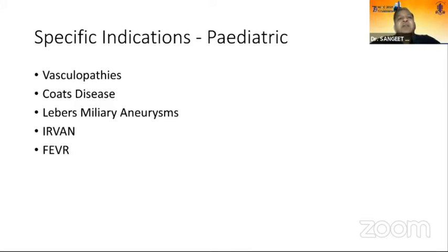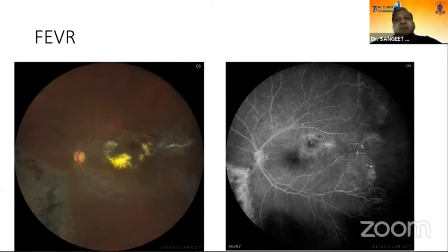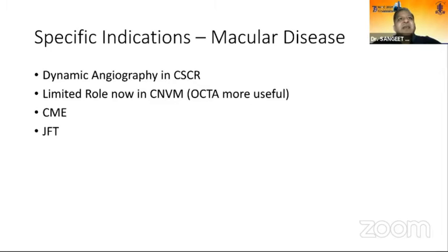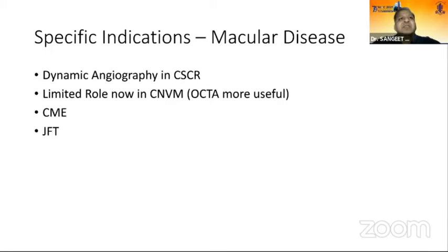Pediatric indications include vasculopathies, Coats' disease, Leber's miliary aneurysms, and others where peripheral ischemia or leaking aneurysms can be picked up — Dr. Diksha will cover this in detail. Regarding macular disease, OCT angiography has largely taken over from FFA; for CNVM management OCTA is more useful, and for CME and JFT, OCTA has replaced FFA. However, in central serous chorioretinopathy, dynamic angiography remains important to identify hotspots.